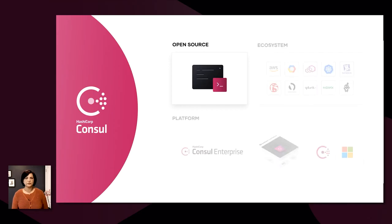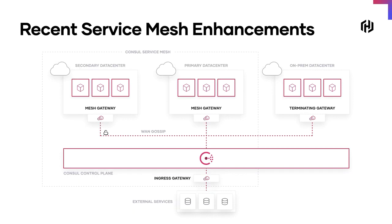Let's start with Open Source. We released a number of features in the last few releases. We released Console 1.8 in May with our own gateway offerings to provide real technical and business value: one, integrating new and existing apps into the mesh with ingress and terminating gateways; two, securely extending service networking across different data center environments with the ability to federate over the mesh gateway.